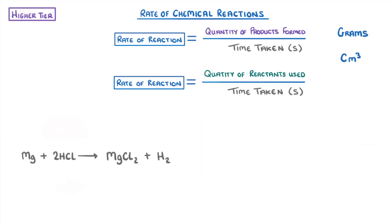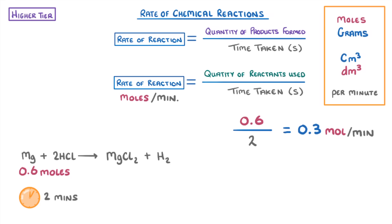Now as well as using grams or centimeters cubed per second, we can also use other units like moles or decimeters cubed per second or even per minute. For example, if we were told that 0.6 moles of magnesium were used in 2 minutes, then to calculate the rate in moles per minute, we would just do 0.6 divided by 2 to give us 0.3 moles per minute. So it really isn't any different to before, you just have to be careful about which units they want the answer in.